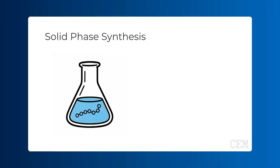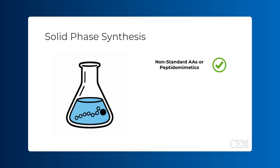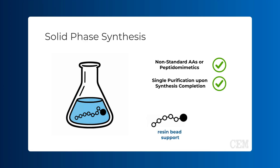Solid phase peptide synthesis is a method where peptides are assembled by chemical means but are tethered to a solid, insoluble support within a solution. Like LPPS, this approach is compatible with sequences requiring non-standard amino acids and peptidomimetics. Unlike LPPS, because the peptide is attached to a solid support, the tedious purifications and isolations required by LPPS are bypassed. While resin beads are the most commonly used solid support, other specialized solid supports exist including discs and membrane sheets. SPPS is the most widely used method of peptide synthesis because it is efficient, scalable, and versatile.